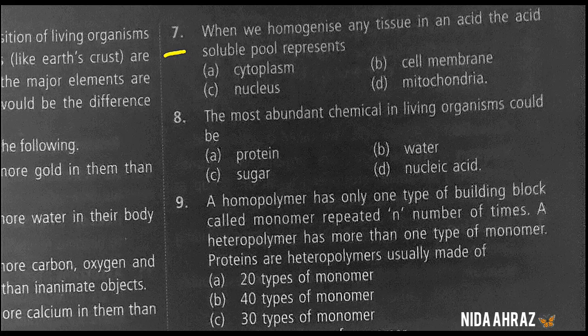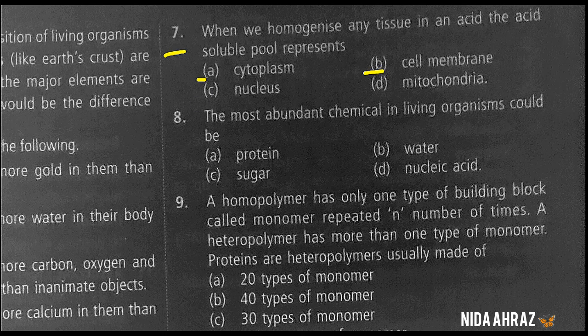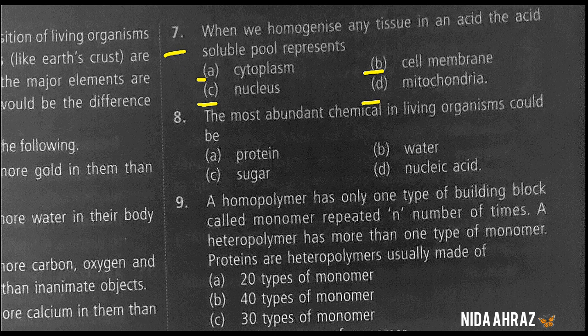When we homogenize any tissue in an acid, the acid-soluble pool represents: cytoplasm, cell membrane, nucleus, or mitochondria. The correct choice is cytoplasm.